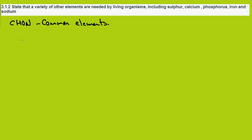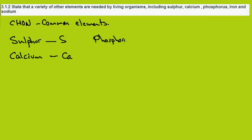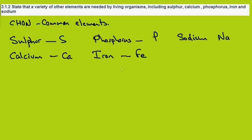These include Sulphur (symbol S), Calcium (symbol Ca), Phosphorus (symbol P), Iron (symbol Fe), and Sodium (symbol Na). These are the additional elements to be found in living things, in combination with the ones already listed.